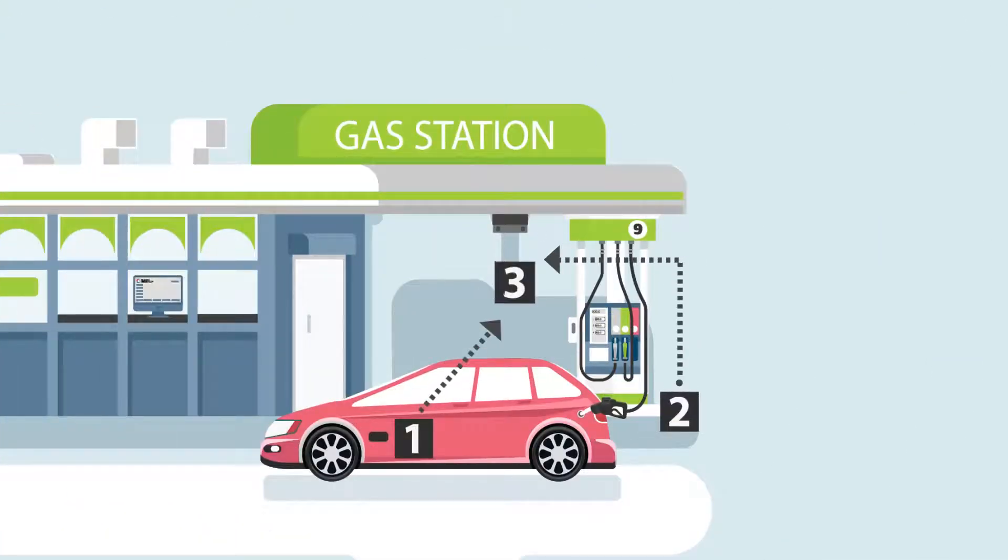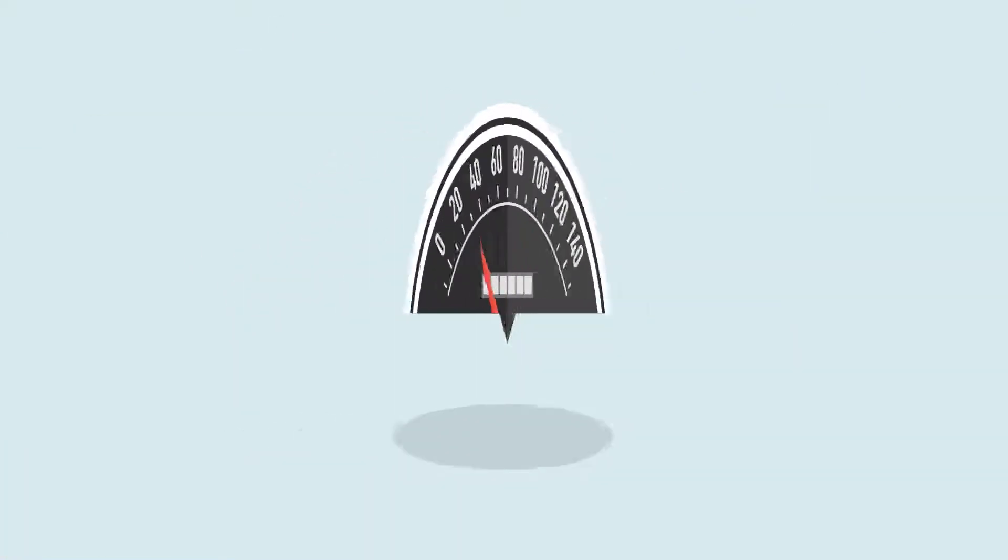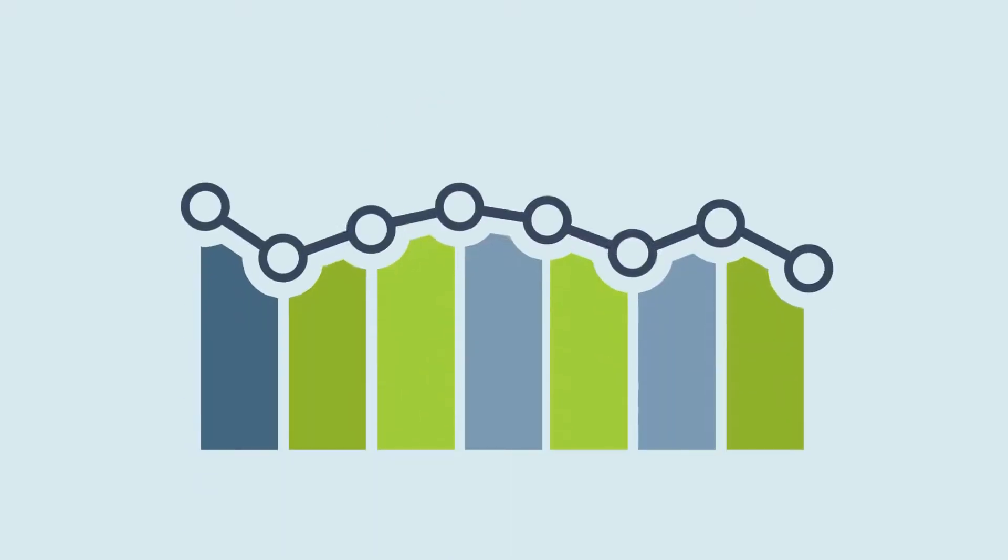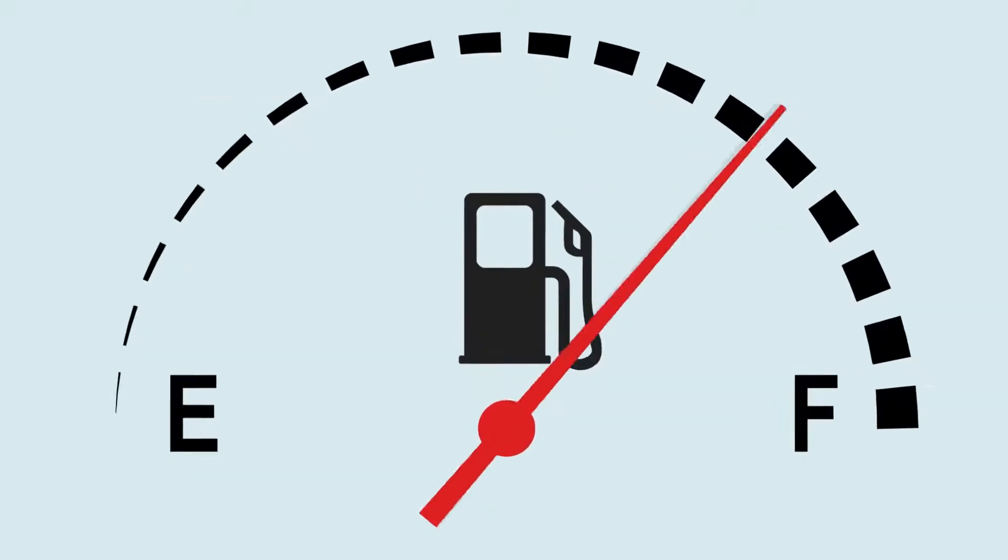Once a vehicle arrives at the station, the vehicle data unit transmits the data to the wireless receiver, including identification, odometer and engine hour, additional data such as diagnostics, fuel level and more.